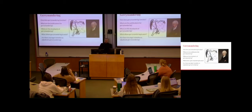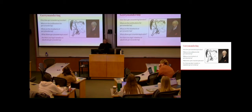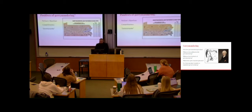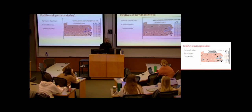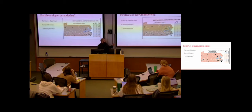The next question is, why does gerrymandering exist? What are the justifications for doing so? There are actually three types of gerrymandering, but I'm going to talk about two: there's partisan gerrymandering and there's bipartisan gerrymandering.